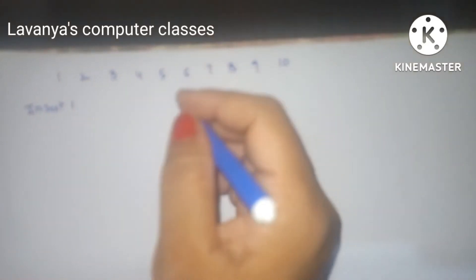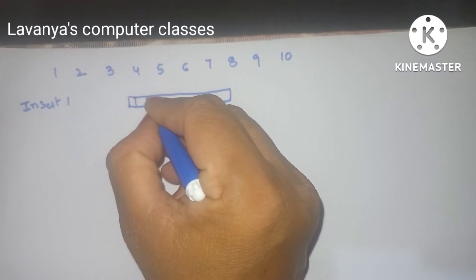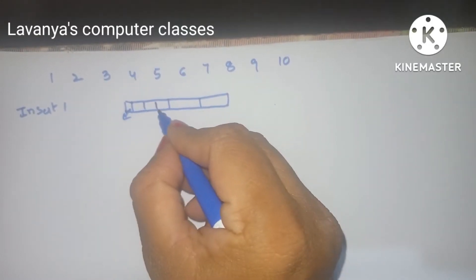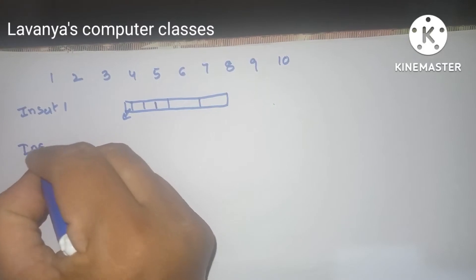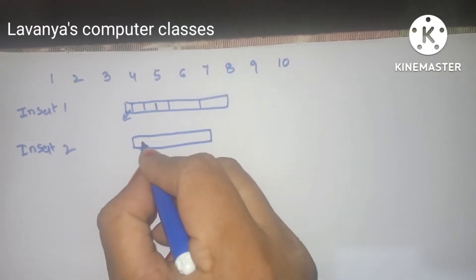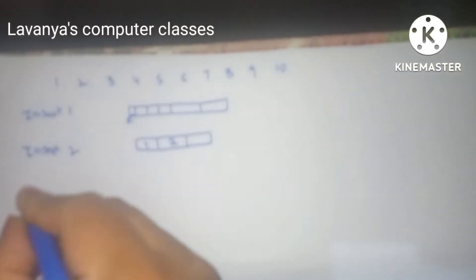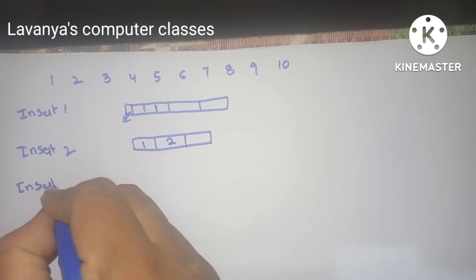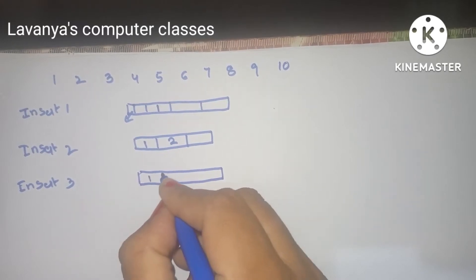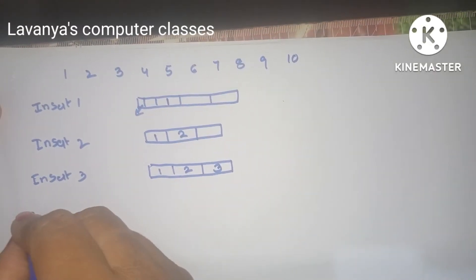First step: insert 1. Insert 1 means 1 goes into the first node. We take a node with 3 slots. Write 1 here; the remaining 2 slots are free. Next, insert 2. The node still has 2 more spaces available. So 2 is kept alongside 1, and the third place is still empty. Next, insert 3. The node now has 3 keys: 1, 2, 3 — the node is full. Now we go for the next element.